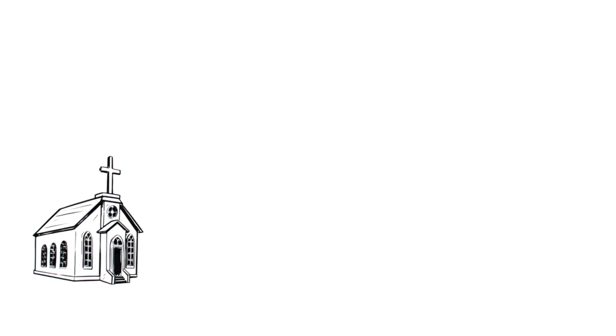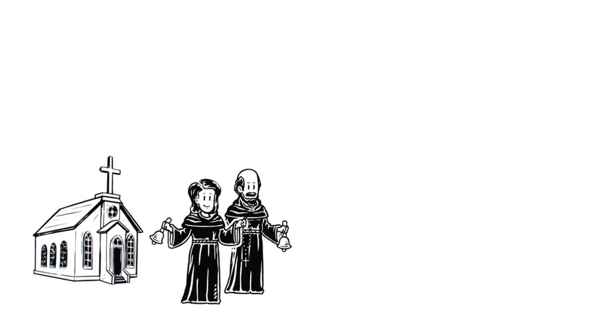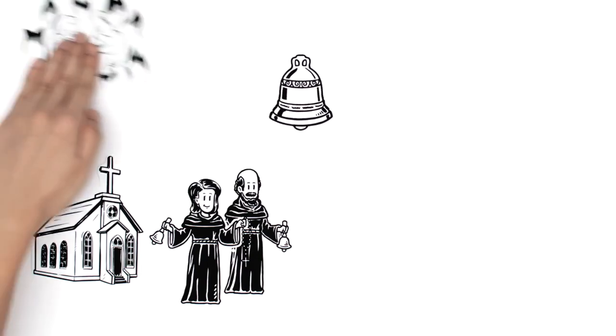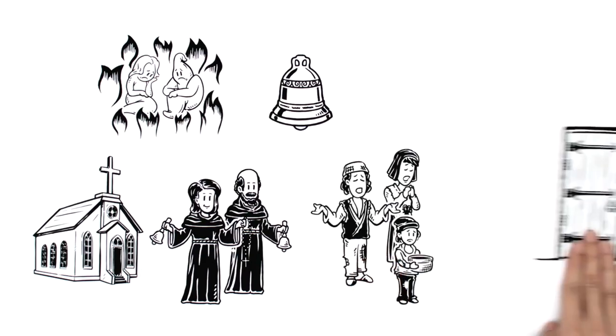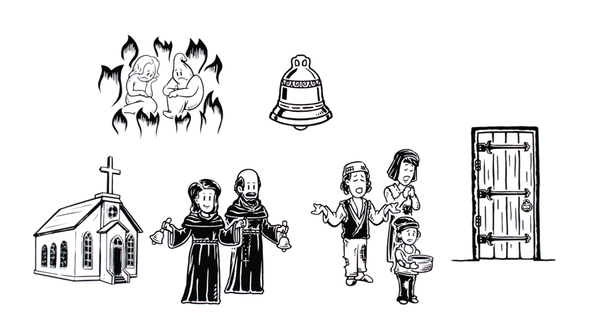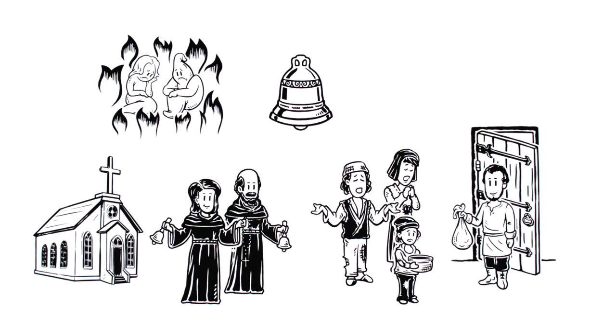At the time, the so-called criers, all dressed in black, rang bells around town, reminding everyone to remember poor souls. And the poor themselves went door to door, offering prayers for the dead in exchange for treats such as soul cakes.